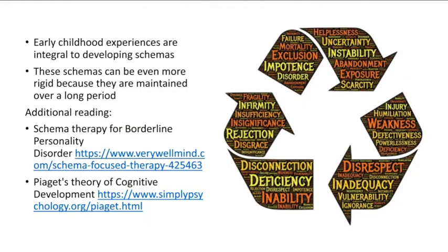Early childhood is a very important time when we develop schemas, and this really does influence how we see the world and interact later on in life. Schemas are broad and pervasive. When they are so deep-rooted — developed during the years when you're first starting to understand yourself — they last longer and remain pervasive throughout your childhood and beyond.